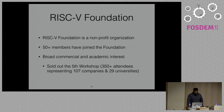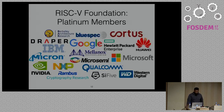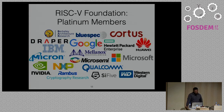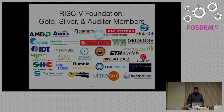Some members of the RISC-V Foundation include big companies such as Google, Hewlett-Packard Enterprise, Huawei, IBM, Mellanox, Micron, MicroSemi, Microsoft, NVIDIA, NXP, Qualcomm, SiFive, and Western Digital. Other members include AMD, ETH Zurich, MIT, and LowRISC. There's a lot of broad commercial and academic interest, and these slides are already a little out of date — the RISC-V Foundation is doing pretty well.